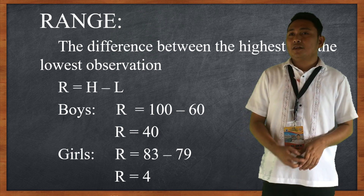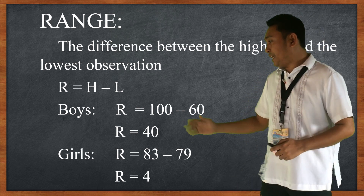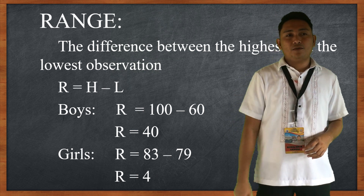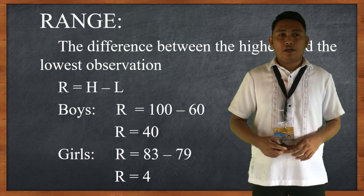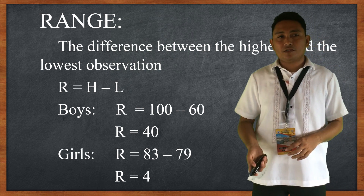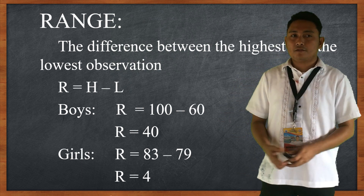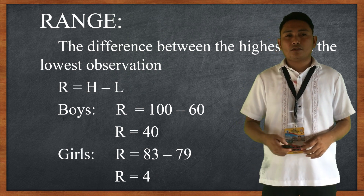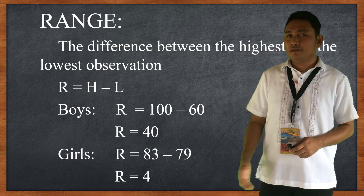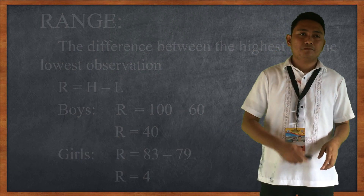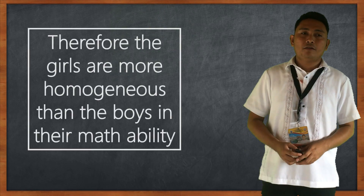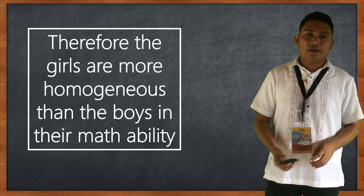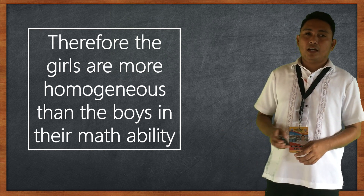For the girls, the highest score is 83 and the lowest is 79, giving a range of 4. So the range of the boys' scores is 40 and the range of the girls' scores is 4. Therefore, the girls are more homogenous than the boys in their math ability.